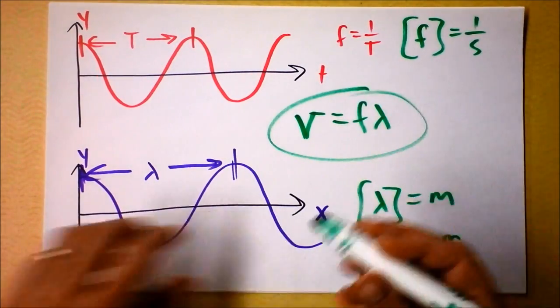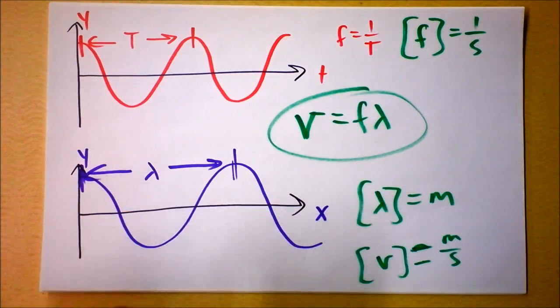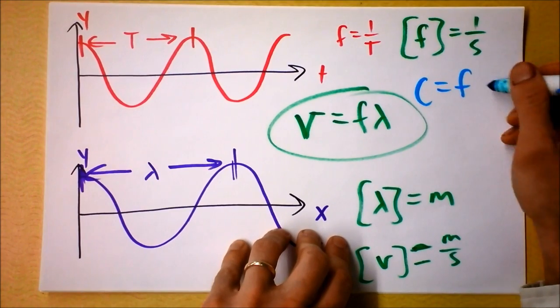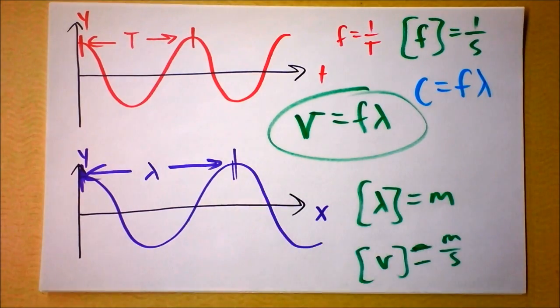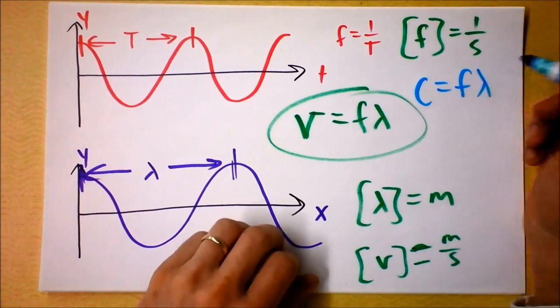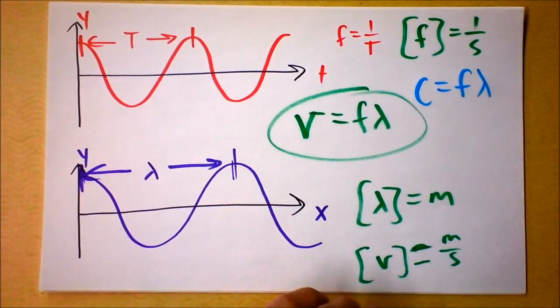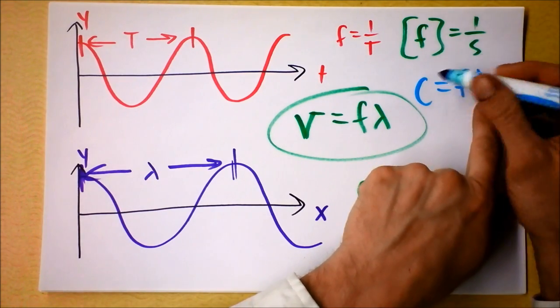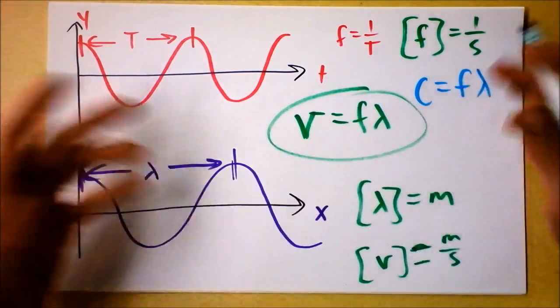And this holds true for the speed of light as well. So we can say that the speed of light is the frequency of light times the wavelength of light. So you can hear light described as a certain frequency, usually in megahertz, gigahertz, something like that. And you can also hear light described by its wavelength.